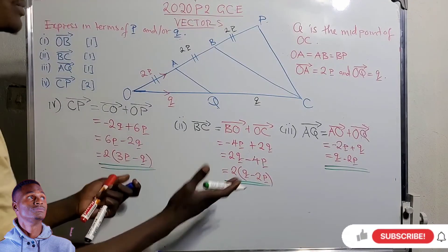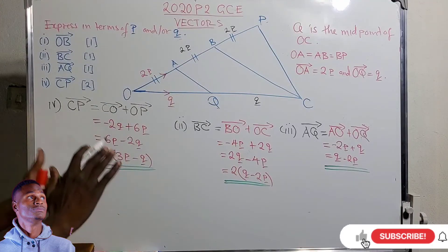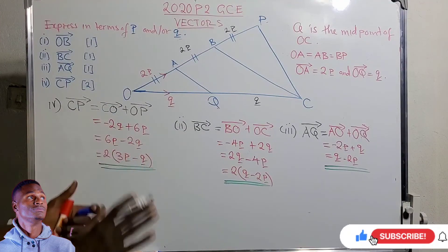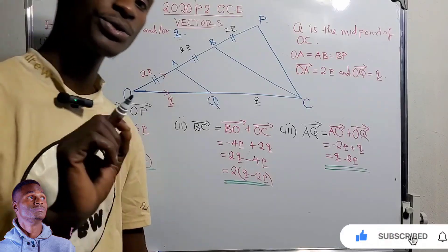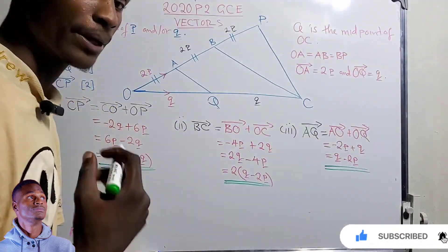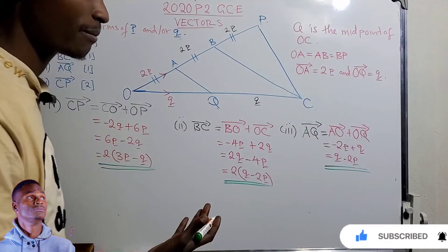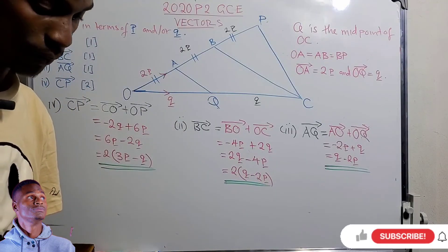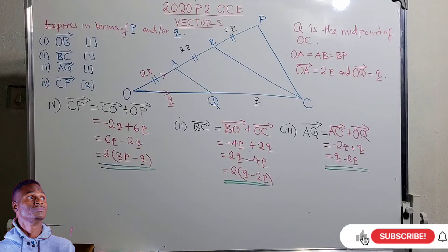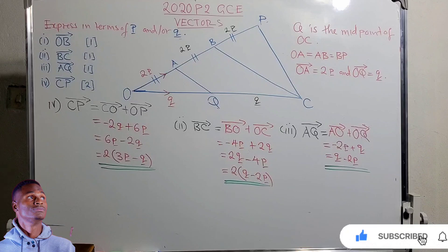Those are the answers to this question. With practice, vectors are very simple, and you should know them because they are compulsory — five marks in Section A of Mathematics Paper 2. Thank you so much. Remember to subscribe and like the video if you've enjoyed the content.